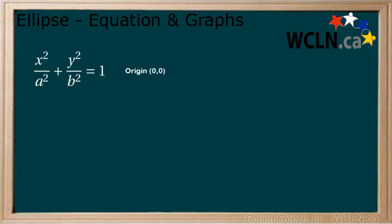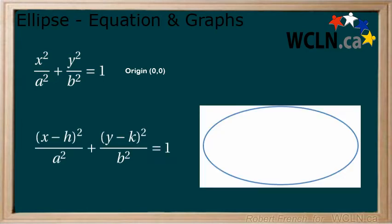A more useful equation of the ellipse looks like this, where h and k are the origin of the ellipse. This equation allows us to work with ellipses regardless of where the origin is.